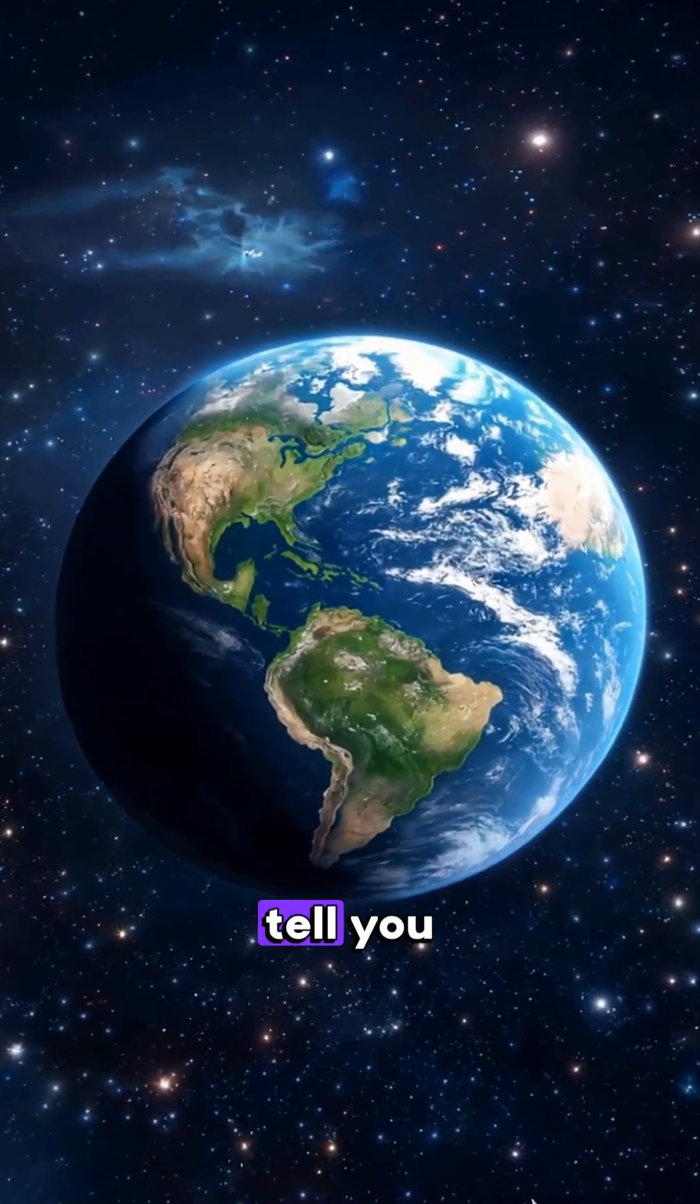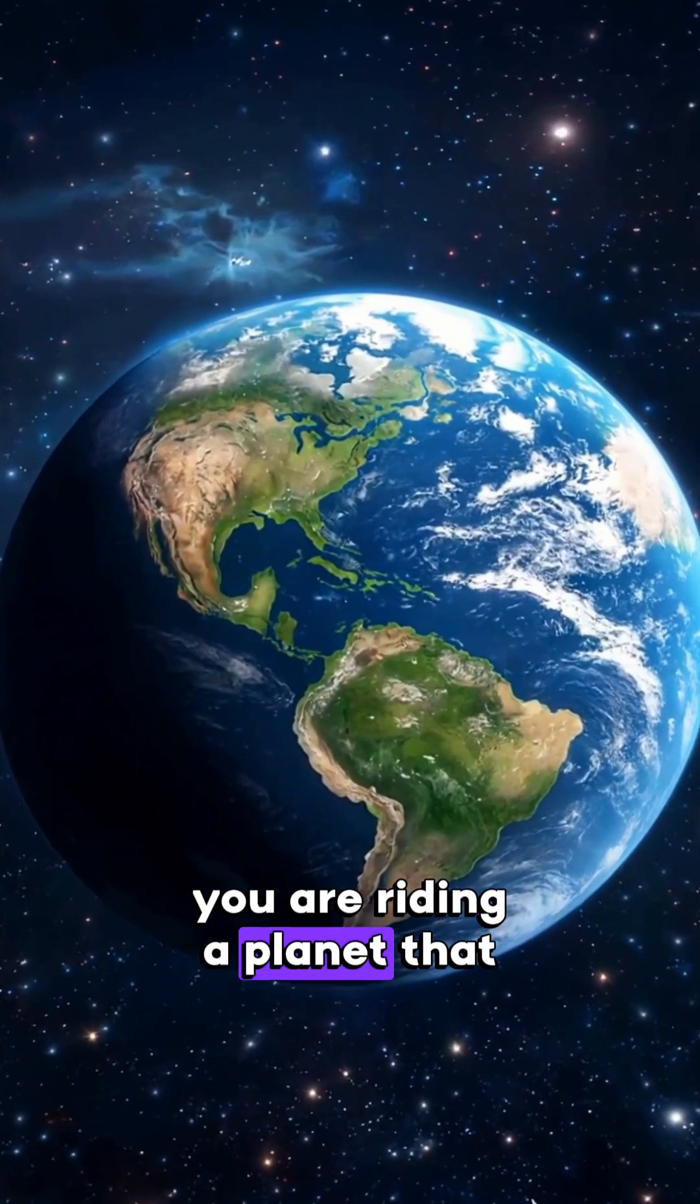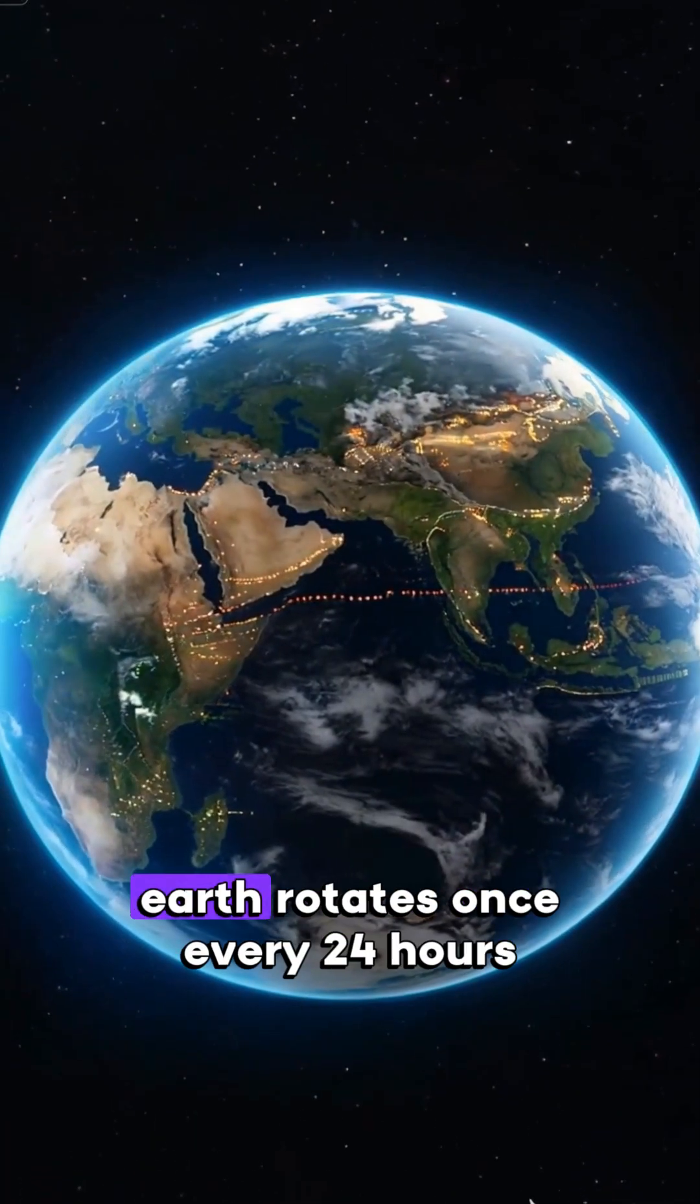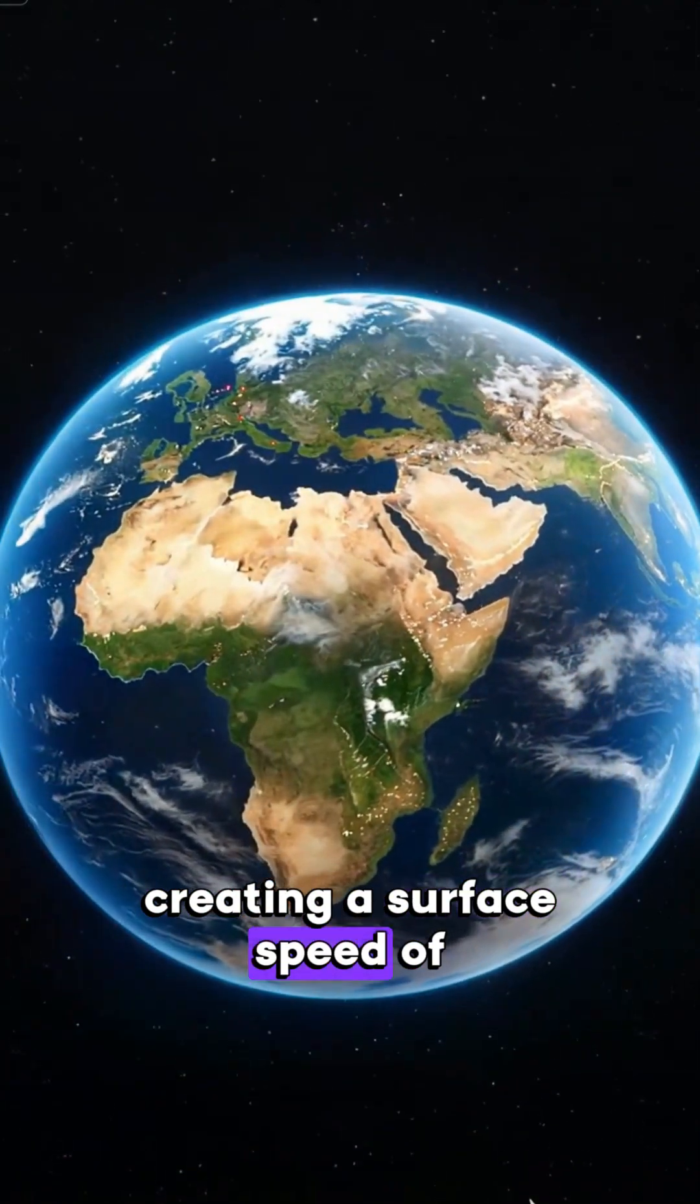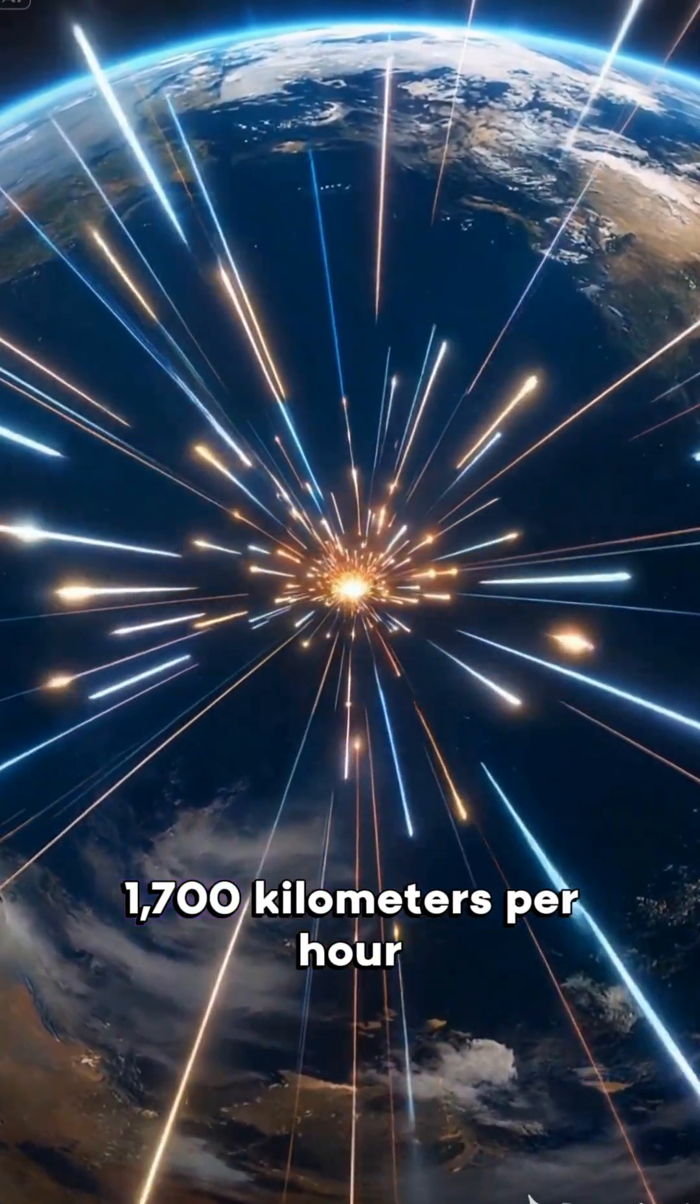Here's something your senses will never tell you. You are riding a planet that never stops moving. Earth rotates once every 24 hours, creating a surface speed of nearly 1,700 kilometers per hour.